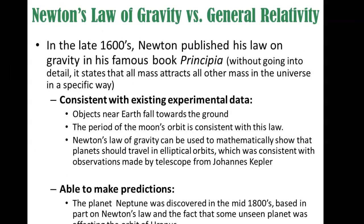Let me give you a specific example. In the late 1600s, Isaac Newton published his law of gravity in his famous book Principia — three laws of motion and then a fourth law, his law of gravity. It basically states that all mass attracts all other mass in the universe in a very specific way. Written as an equation: the force of gravity between two masses equals a constant G times the product of the two masses divided by the distance between them squared.